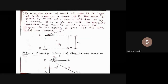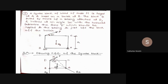The very first step is to draw the free body diagram. On the square block I will be drawing the free body diagram. If the square is of side A and weight of the block is acting from its center of gravity mg, then this distance will be A/2 and this distance will also be A/2.